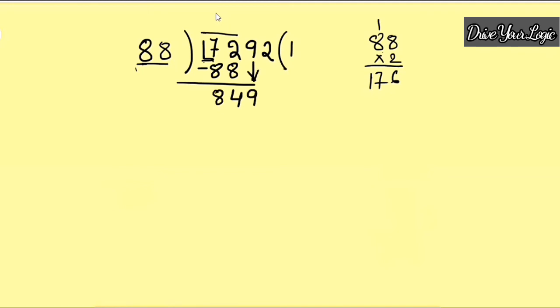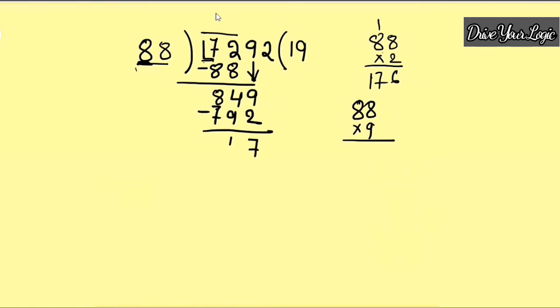Subtract and bring down 9, giving 849. Now with what can you multiply 8 so the last digit is near 8 or 9? Try 9: check 88 into 9 — that is 792. Yes, we can use 792. Subtract 792 from 849, and you get 57. Bring down the next digit 2.